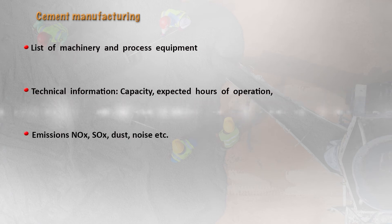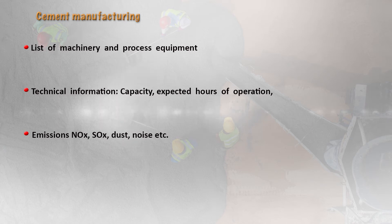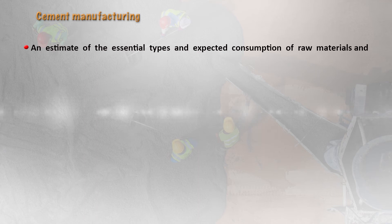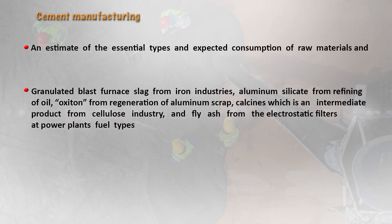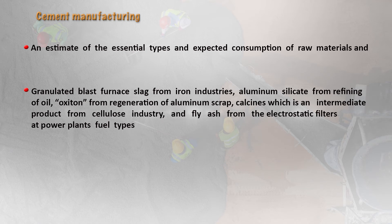A list of machinery and process equipment is needed, with technical information on capacity, expected hours of operation, and emissions regarding nitrogen oxides, sulfur oxides, dust, and noise levels. An estimate of the essential types and expected consumption of raw material is required, including granulated blast furnace slag from the iron industry, aluminum silicate from oil refining, the regeneration of aluminum scrap, calcines from the cellulose industry, and fly ash from electrostatic filters at power plants.